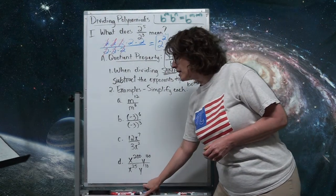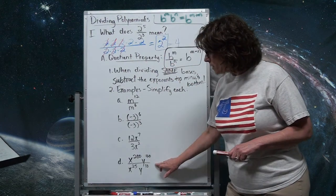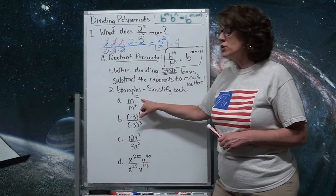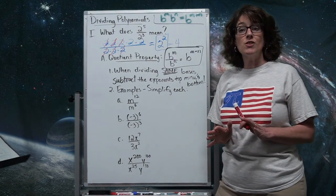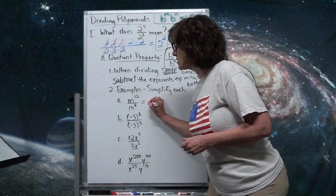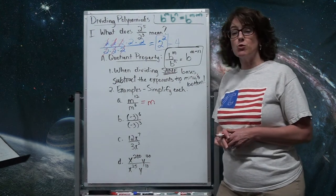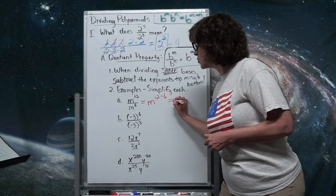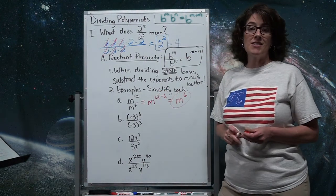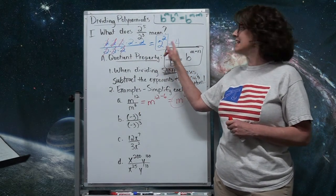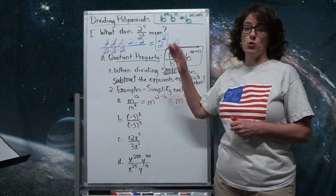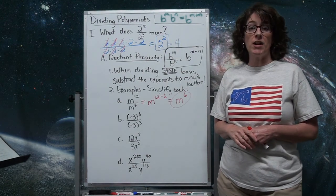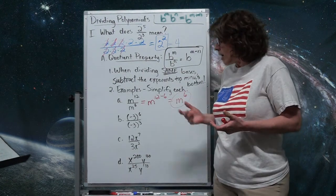Let's use the quotient property on four examples. In the first, I have m to the 12th divided by m to the 6th. The bases are the same, so I keep the base and subtract the exponents top minus bottom: 12 minus 6 gives me 6. The answer is m to the 6th. I don't know what m is, so I can't simplify further.